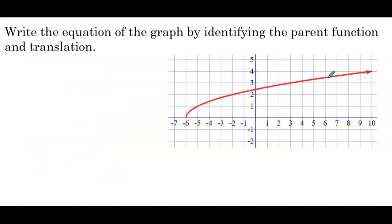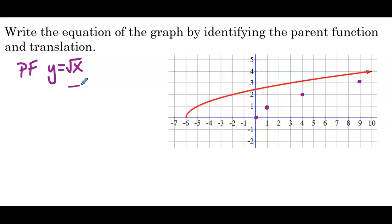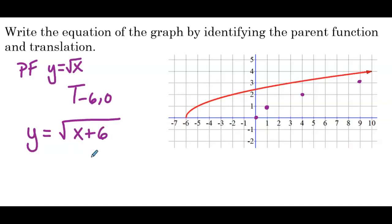The next graph has parent function y equals the square root of x. Plotting points 0,0 and 1,1 and 4,2 and 9,3 and comparing to the given graph, it looks like the graph has been moved left 6. So translation is negative 6, 0. In our equation we'd have y equals the square root of x plus 6 — adding 6 to the x values inside the parent function. The equation tells us how to get from the translated red graph back to the parent function.